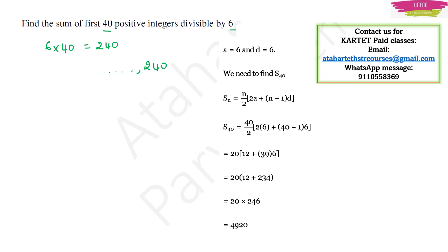Then you need to write the first 3 terms maybe. They are divisible by 6, so just write table of 6. 6 ones are 6, 6 twos are 12, 6 threes are 18. So much is enough. Now a is 6 and d also will be equal to 12 minus 6 and it will be 6 only. Now we need to find the sum of 40 terms. So Sn is equal to n by 2 into 2a plus n minus 1 into d. Just substitute.